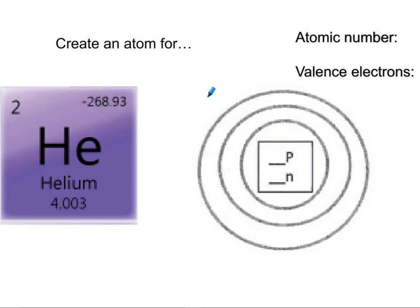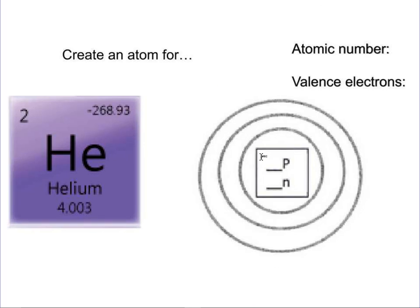This one says: create an atom for helium. So I'm asking for protons, neutrons, electrons, atomic number, and valence electrons. Helium's atomic number would be two — it's up in the top corner and it is a whole number. And then we have to draw the picture to find the valence electrons.